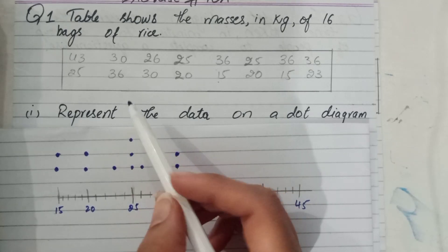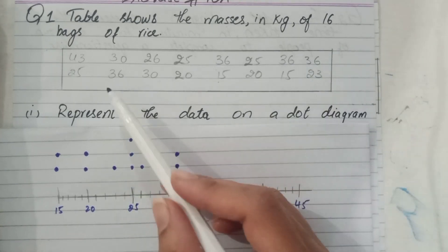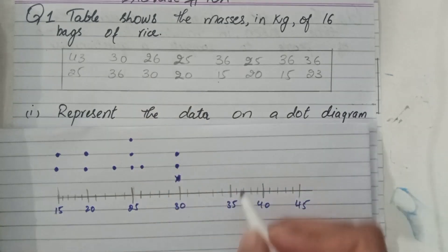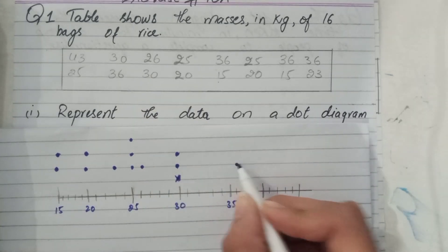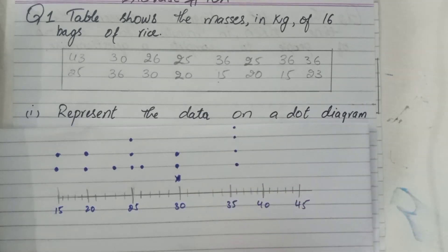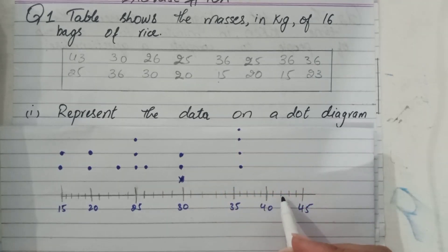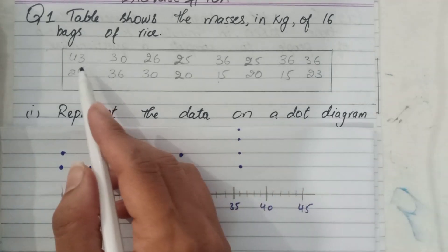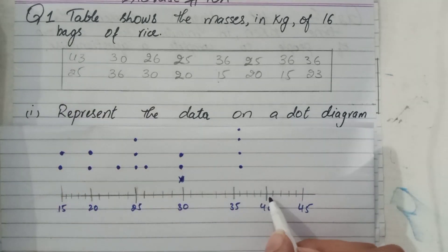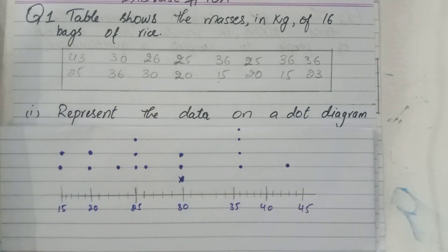For 36, there are four values. And the last value is 43 — there are three dots at 43. That completes the dot diagram.